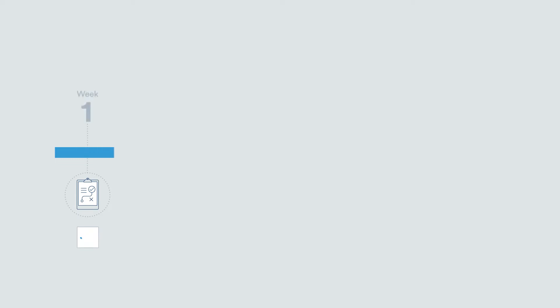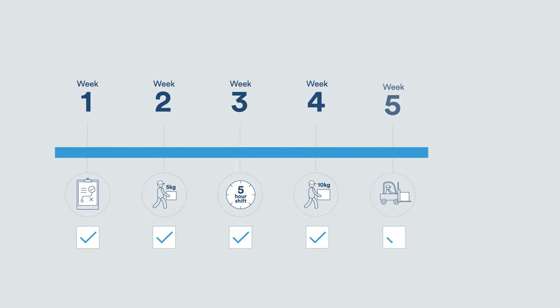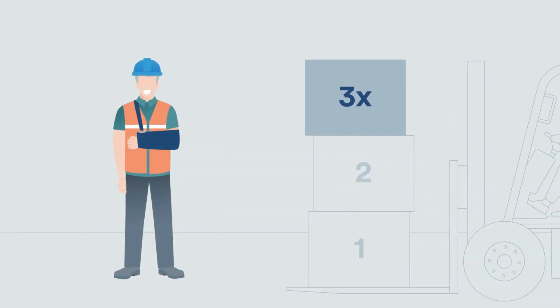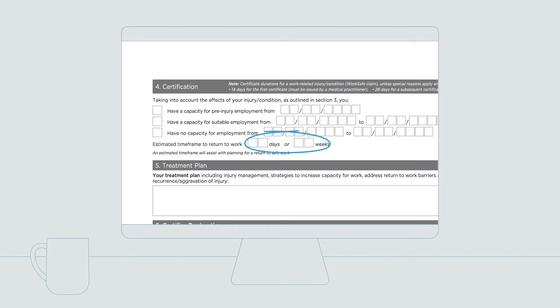When assessing your patient and going through the certificate, provide them with a timeline and encourage work as part of your patient's recovery. By focusing on what they can do rather than what they can't, you'll be positively influencing their recovery. Evidence shows that patients are more than three times as likely to return to work soon after injury if their health professional gives them a return date. Indicate this timeframe when you decide your patient's certification based on your capacity assessment.